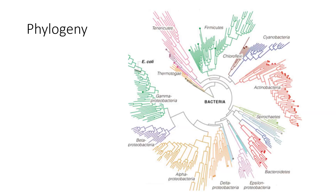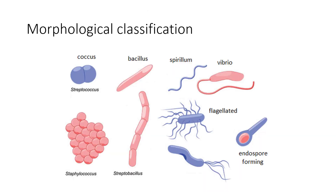Here's a sample phylogenetic tree of bacteria — there are lots of different versions. If we classify them morphologically or based on cell structure: coccus means sphere. A common bacterium is Streptococcus — a species of Streptococcus causes strep throat.